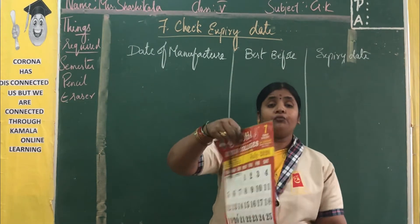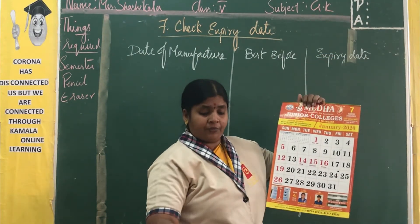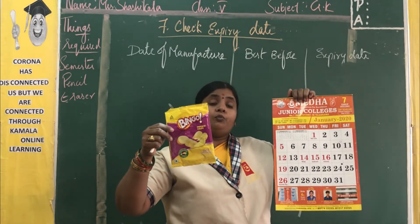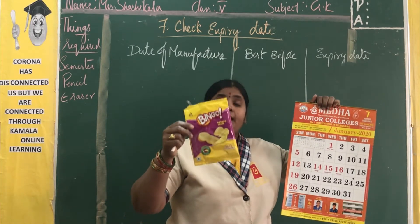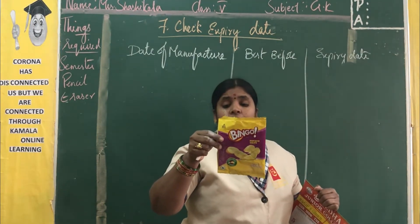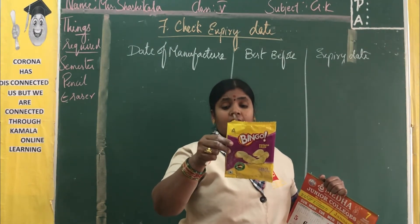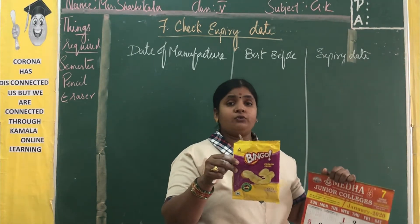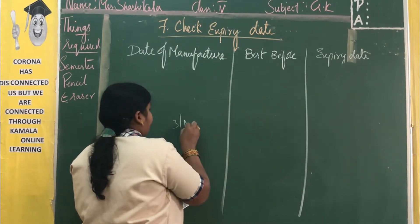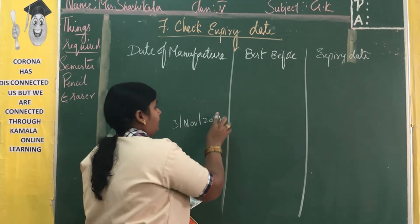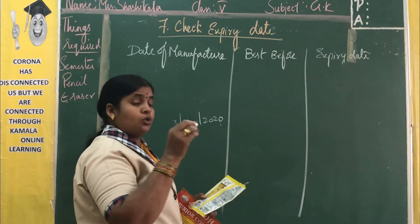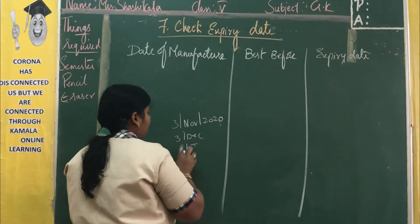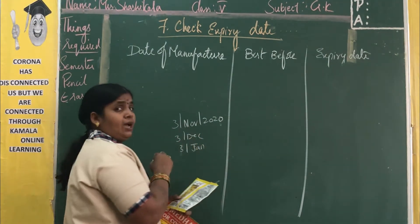How can we calculate the expiry date? That is possible with the help of the calendar. Suppose here — you can see this is a Bingo packet. The expiry date is: manufactured on 3rd November 2020, and best before 2 months. After 2 months we should not use it. So from 3rd November 2020, and best before only 2 months — that is 3rd December and 3rd January. In these 2 months only we have to eat this.